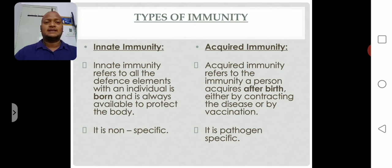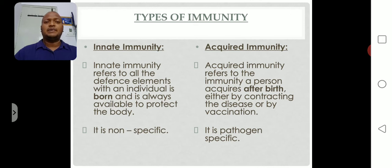Innate immunity is not specific against any particular antigens or foreign substances. So to summarize: innate immunity is the immunity present at the time of birth, and it is non-specific.